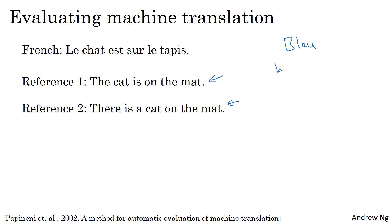BLEU, by the way, stands for Bilingual Evaluation Understudy. In the theater world, an understudy is someone who learns the role of a more senior actor so they can take over if necessary. The motivation for BLEU is that whereas you could ask human evaluators to evaluate the machine translation system, the BLEU score is an understudy — a substitute for having humans evaluate every output of a machine translation system.